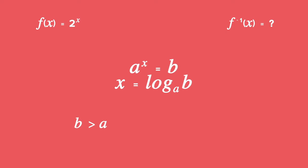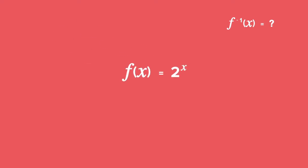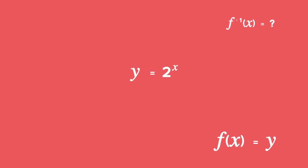Note the restrictions on each of the variables. To find the inverse of a function, step 1 is to swap the x and y values. Remember that another way to write f of x is y. By swapping x and y in this function, you will get x equal to 2 to the power of y.